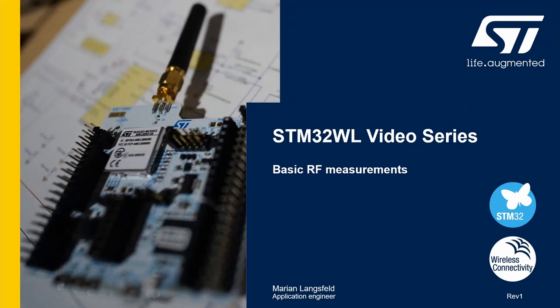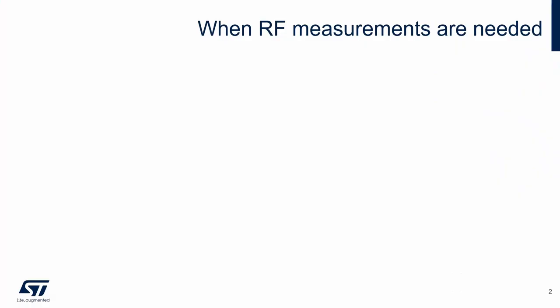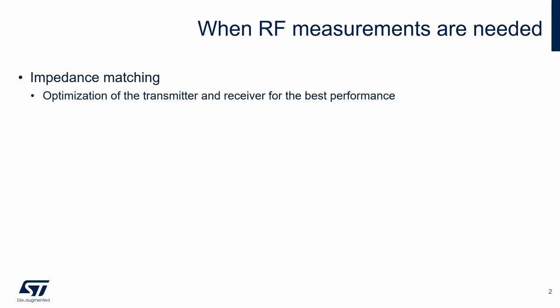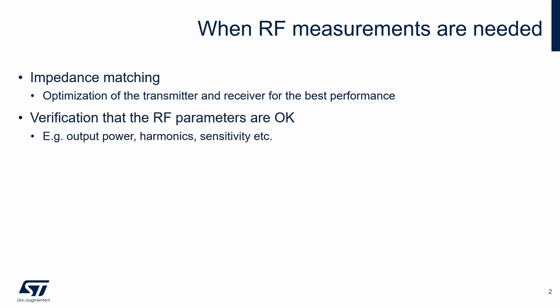In this video we will discuss the basic RF measurements of the STM32WL board. There are several situations where RF measurements need to be made. For example, impedance matching, where we optimize the transmitter and receiver for the best performance. Then we may need to verify that the RF parameters of our device are as expected — for example, the output power and receiver sensitivity are the same as in the datasheet and there is no performance loss due to implementation.